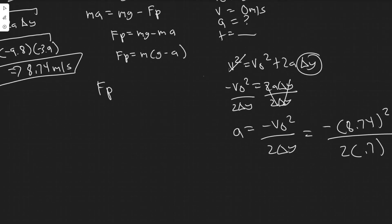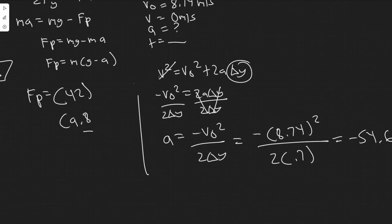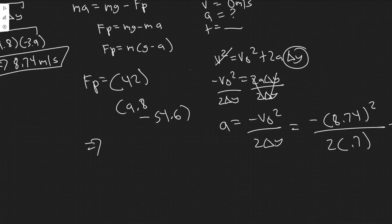Now we have everything to find F_P. F_P equals mass times (g minus a). The mass they give us is 42 kg. Since downwards is positive, g is positive 9.8. The acceleration is minus 54.6, so g minus a becomes 9.8 minus (minus 54.6), which is just 9.8 plus 54.6. So F_P equals 42 times (9.8 plus 54.6).